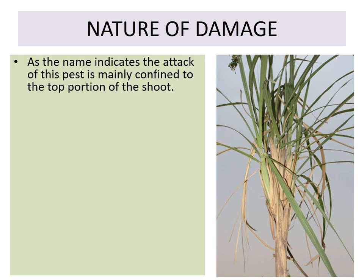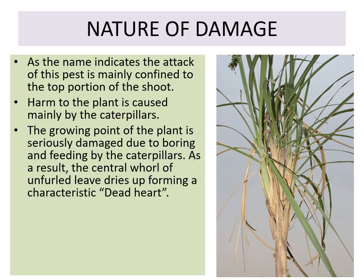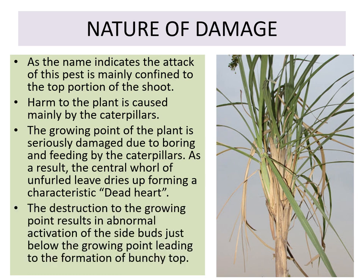Regarding the nature of damage — as the name indicates, the attack of the pest is mainly confined to the top portion of the shoot. The harm to the plant is caused mainly by the caterpillar. The growing point is seriously damaged due to boring and feeding, and as a result the central whorl of unfurled leaves dries up, forming a characteristic dead heart.